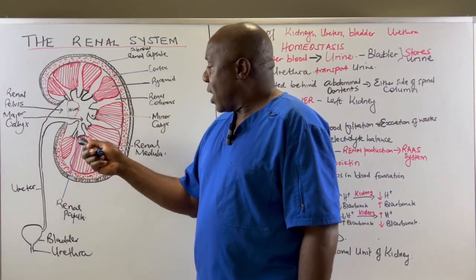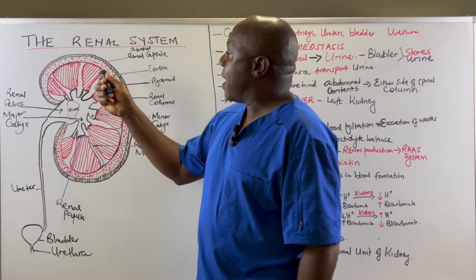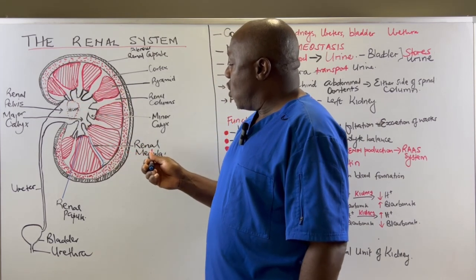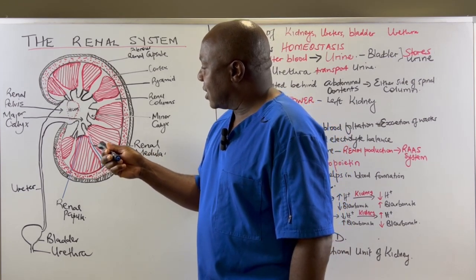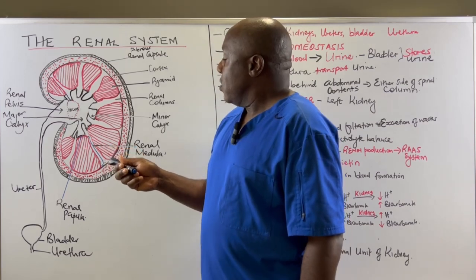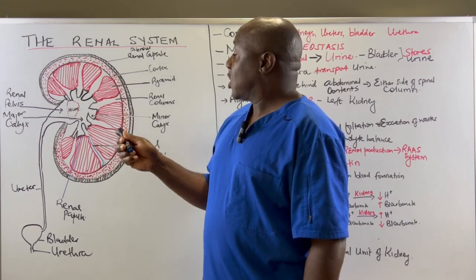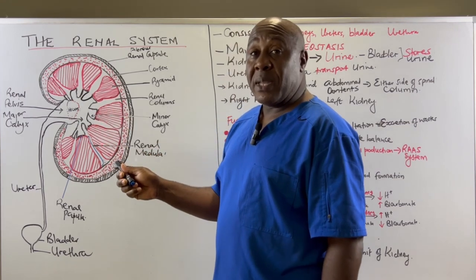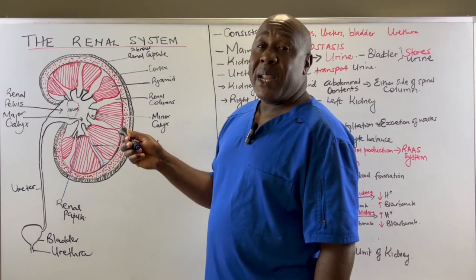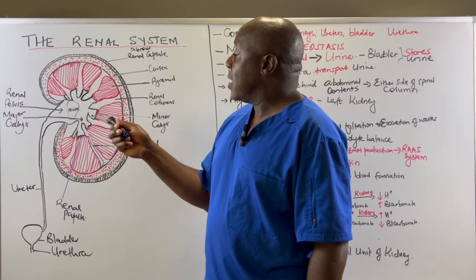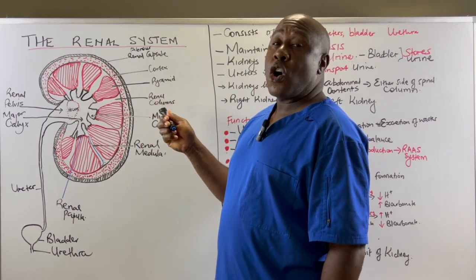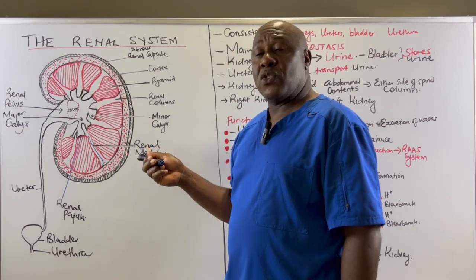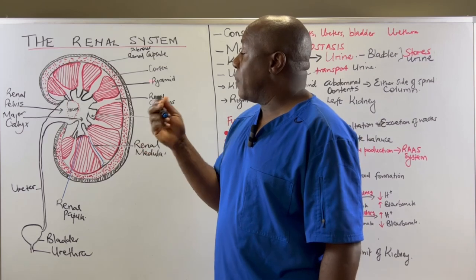Below the renal capsule we have a layer referred to as the renal cortex — this is the layer that lies under the renal capsule. The inner layer of the kidney is referred to as the renal medulla. The renal medulla is made up of various structures called pyramids. A pyramid is separated from another pyramid by a structure known as the renal column. Renal columns are intertwined with blood vessels and capillaries supplying blood to the kidney.